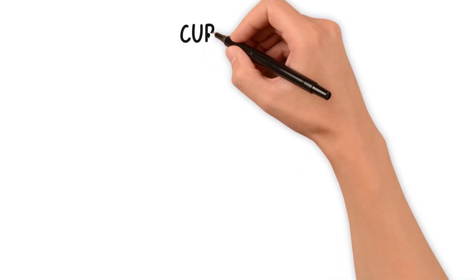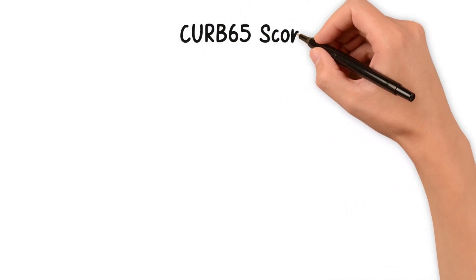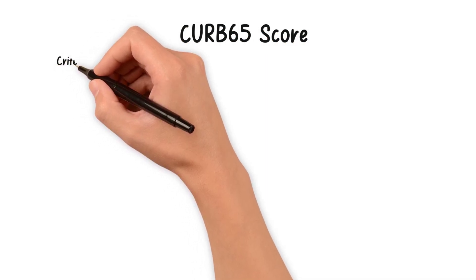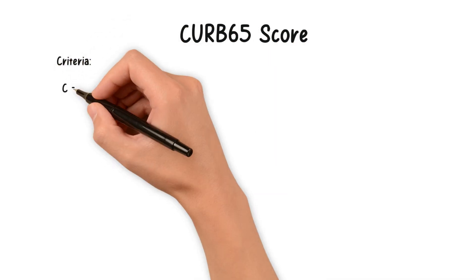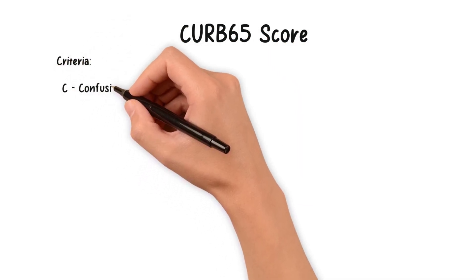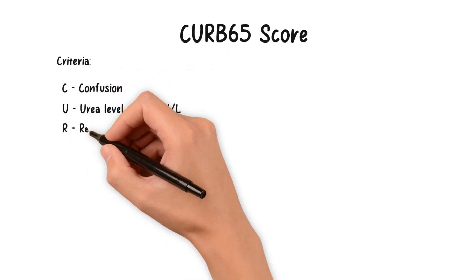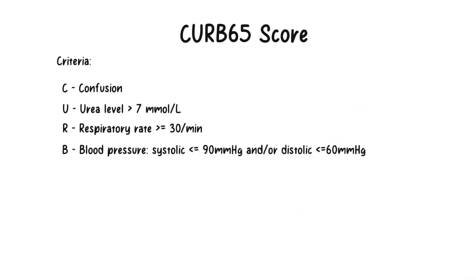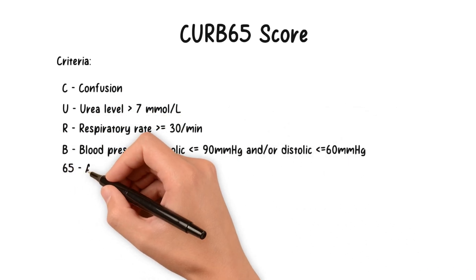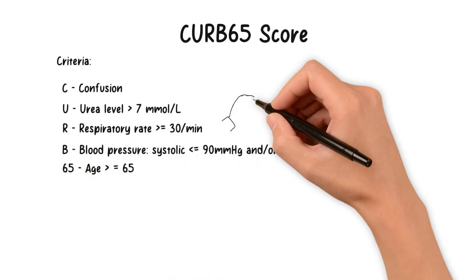To assess the severity of pneumonia and guide treatment decisions, the CURB-65 score is widely used. CURB-65 evaluates five criteria: Confusion, Urea (blood urea nitrogen level), Respiratory rate, Blood pressure, and Age. Each criterion receives one point if present.